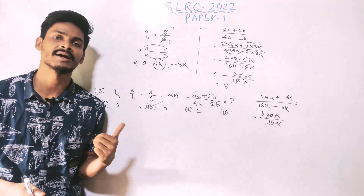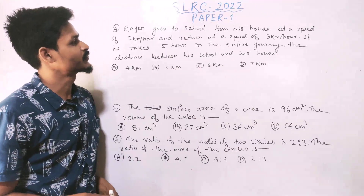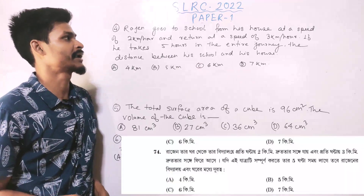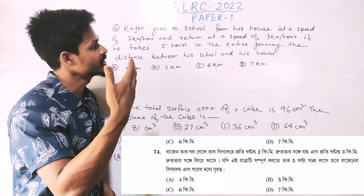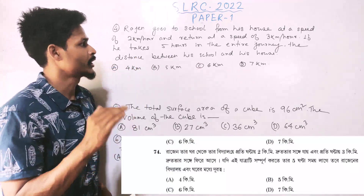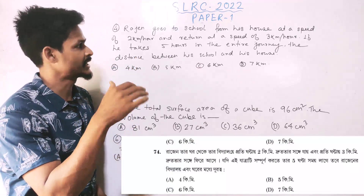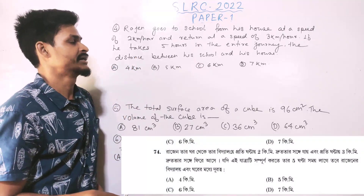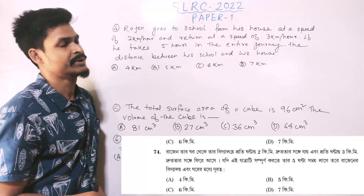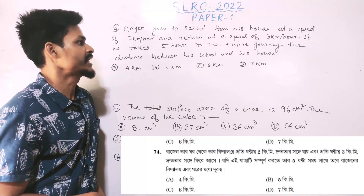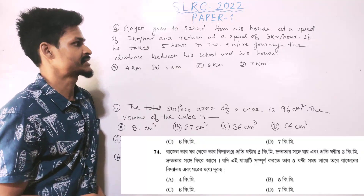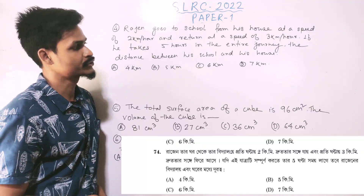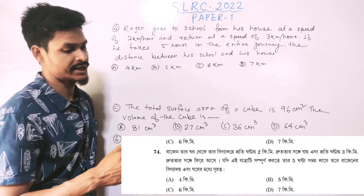Question 4: Rajan goes to school from his house at a speed of 2 km per hour and returns at a speed of 3 km per hour. If he takes 5 hours for the entire journey, find the distance between his school and his house.